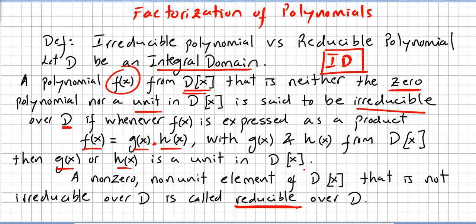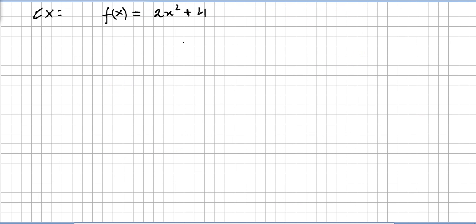There is a nuance here between these two words — we have to be really careful. Let us take a first example: let us take the polynomial f(x) = 2x² + 4. Let us check if it is reducible or irreducible over the rationals and over the integers. So 2x² + 4, you can factor this as 2 · (x² + 2).